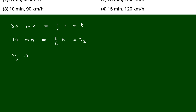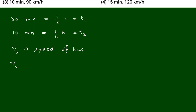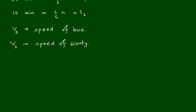Let vb be the speed of the bus and vs be the speed of the scooty. Using relative motion, the relative displacement will be the same for both scenarios — when they are moving in the same direction and when they are moving in the opposite direction.